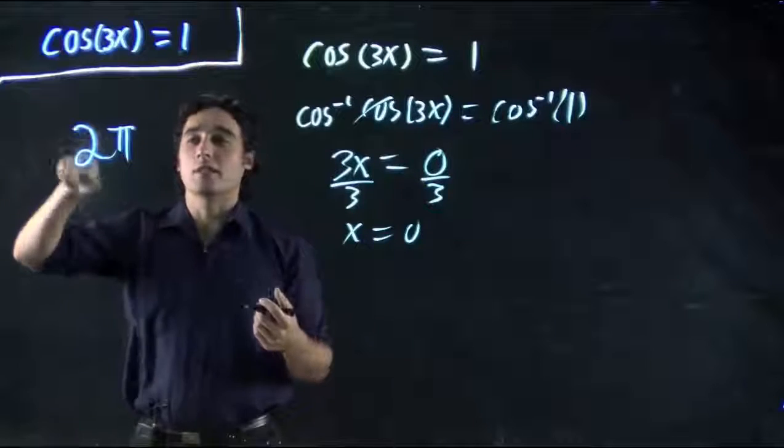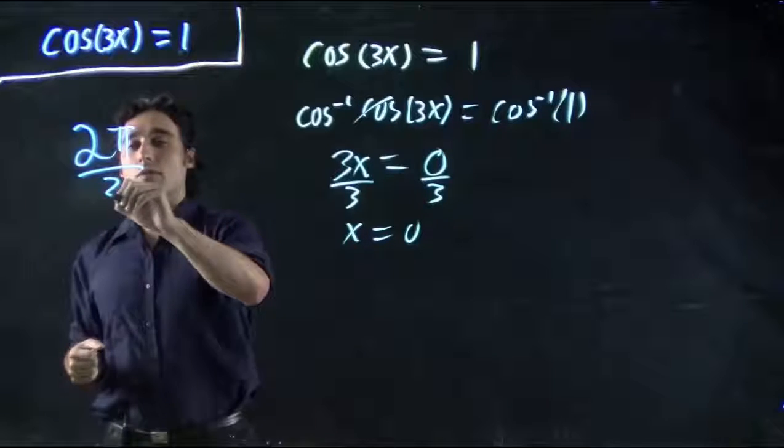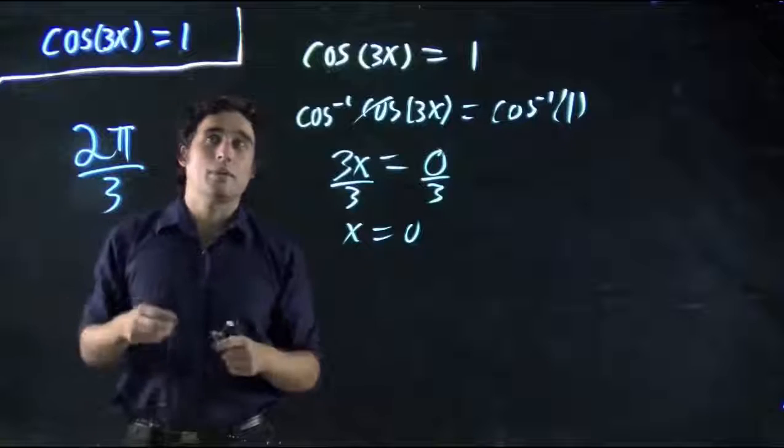In our previous one, k was 1, so we just had 2π. Well, in this case, the period is 2π over 3, or 2 over 3π.